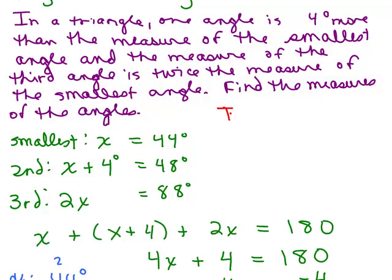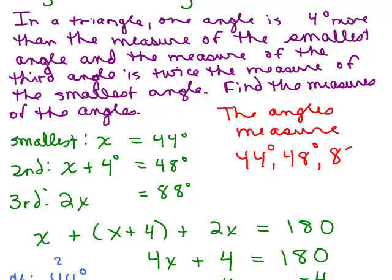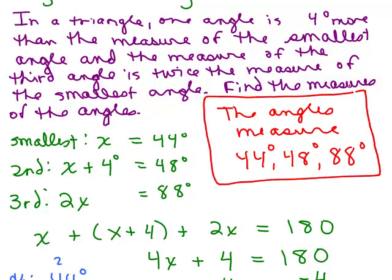You want to go back up to the words and make sure your answer makes sense. So our answer is the angles measure 44 degrees, 48 degrees, and 88 degrees. We've done another word problem dealing with triangles and angles.